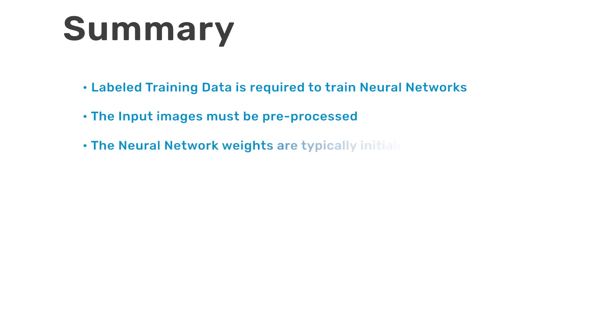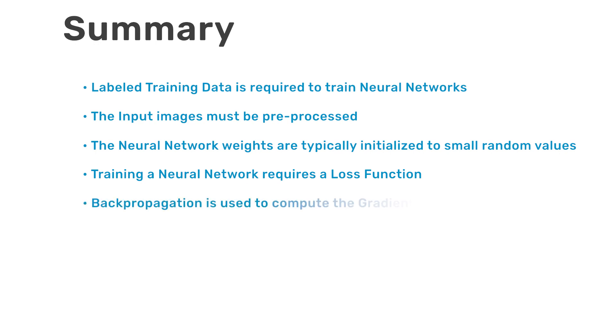The neural network weights are typically initialized to small random values. Training a neural network requires a loss function which is used to quantify the error between the network output and the expected output.